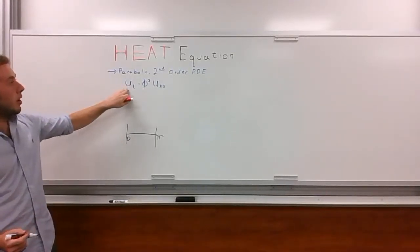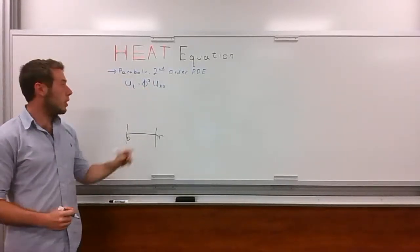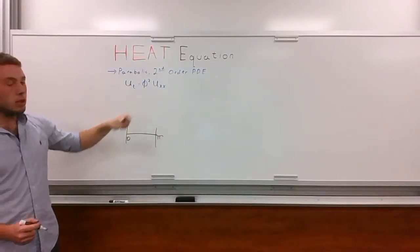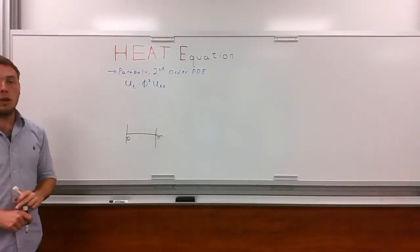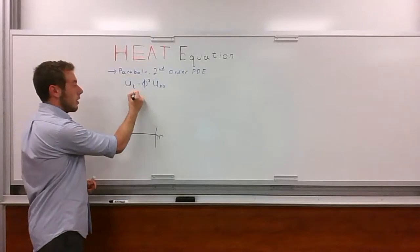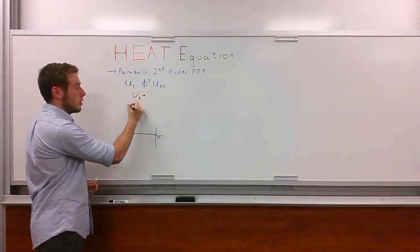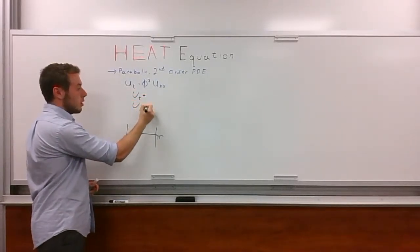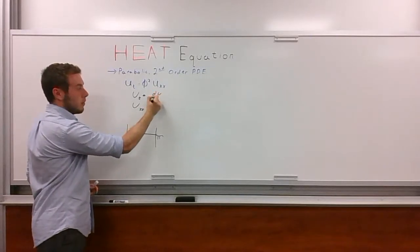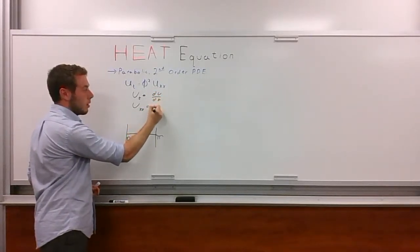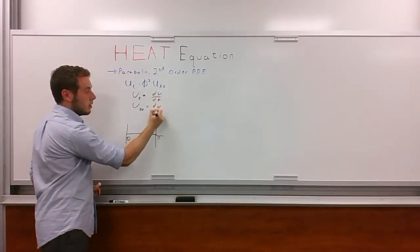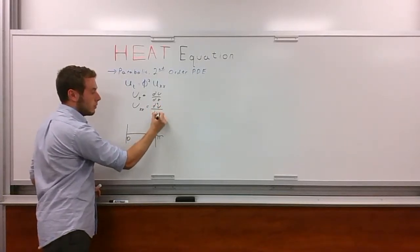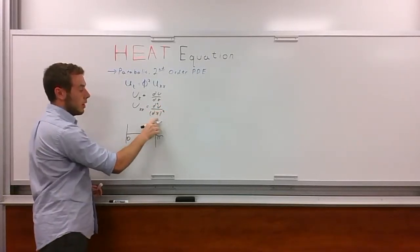This is a parabolic second-order partial differential equation, and it takes this form: ut equals phi squared uxx. We're going to take first a look at this notation. ut is the first derivative of u with respect to time. uxx is equal to the second derivative of u with respect to x.